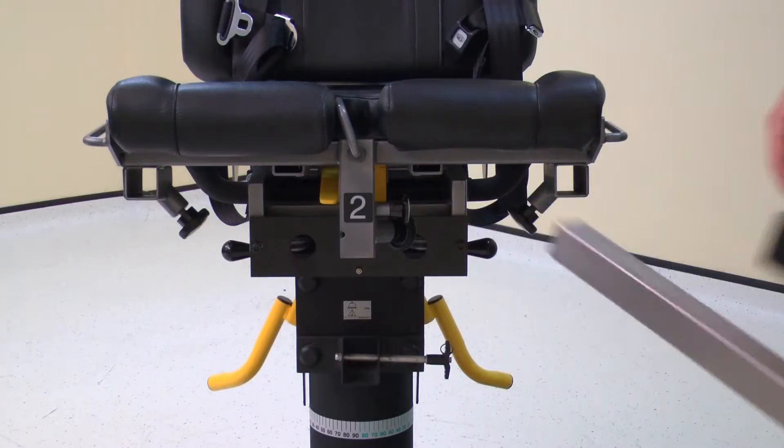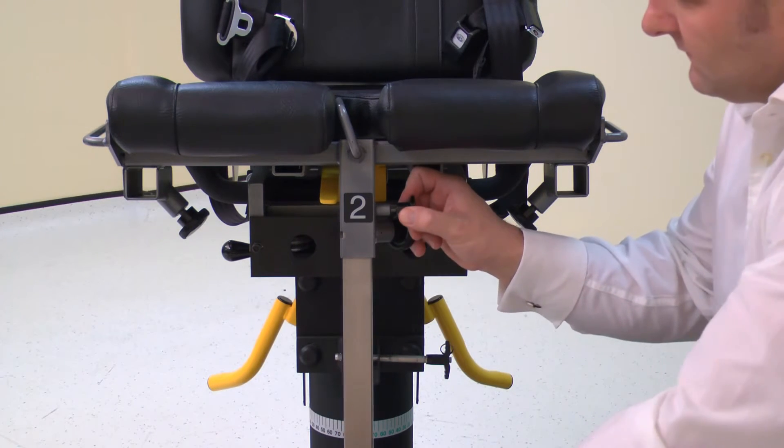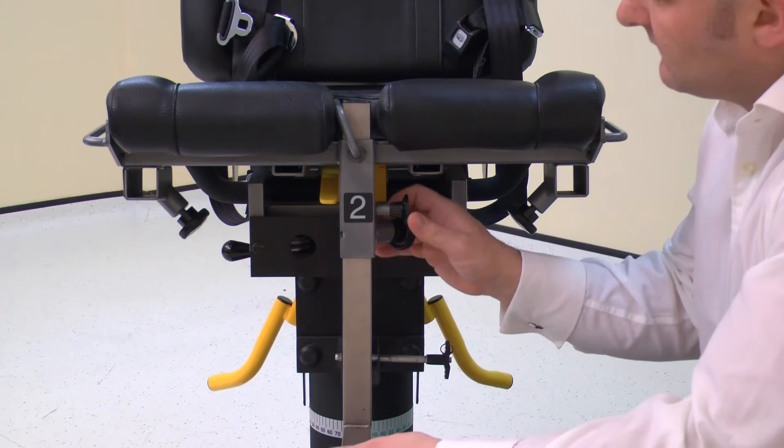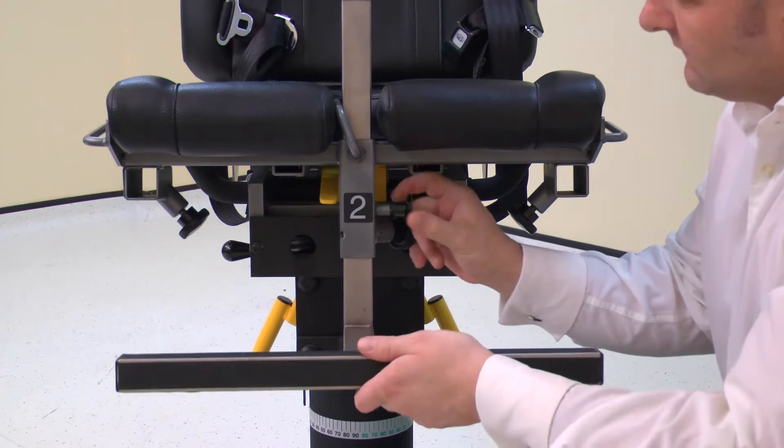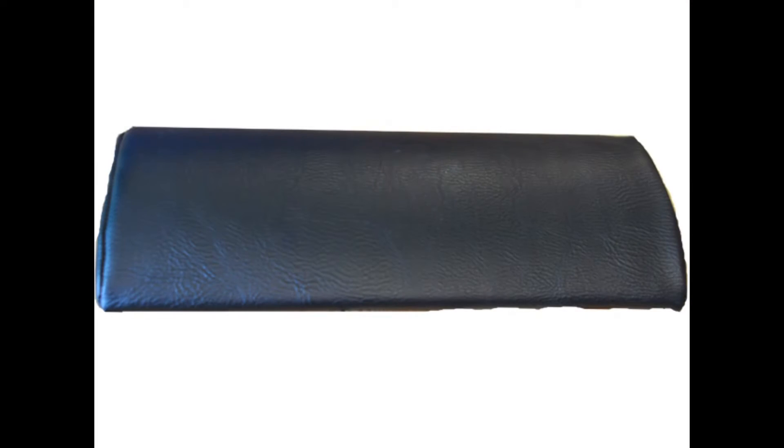Next, install the footrest into the chair using tube number 2. Pull the locking pin to allow full installation. Secure with the locking screw. Place the pillow on the chair if required.